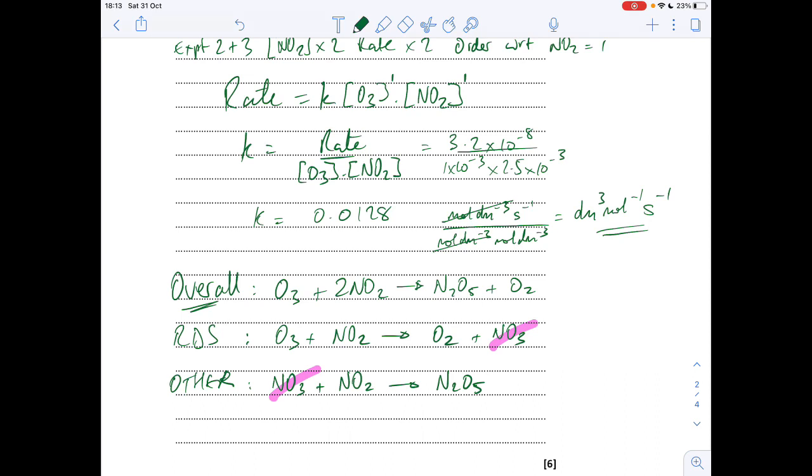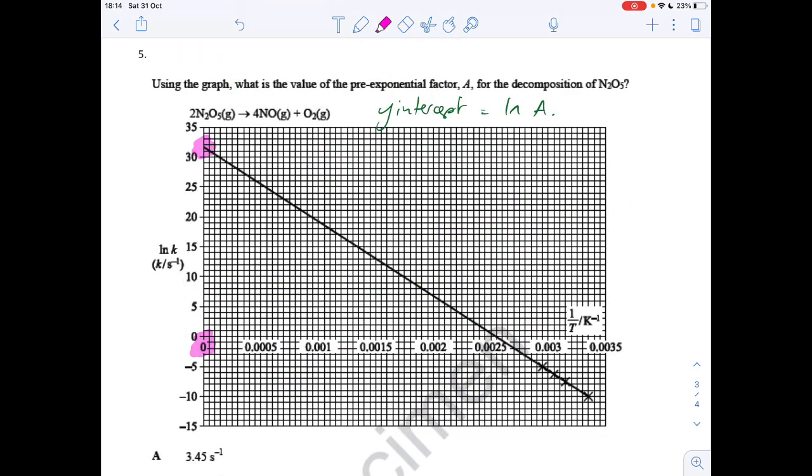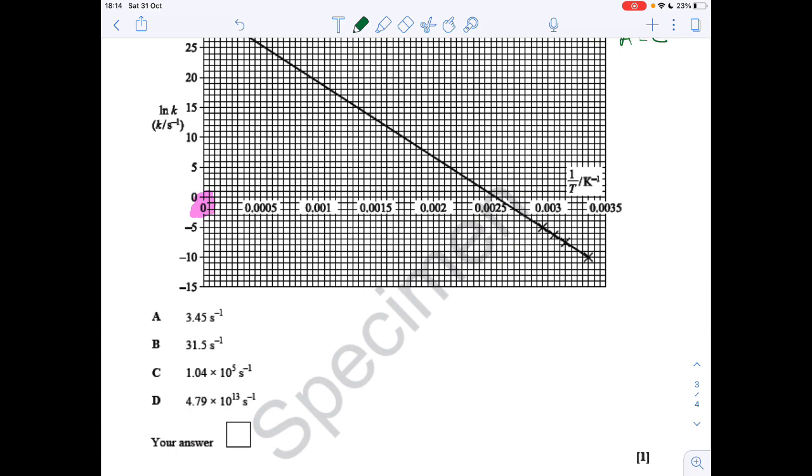Question 5: It's an Arrhenius graph. You can see I've highlighted the fact that it starts at zero on the x-axis, which means that the y-intercept is equal to the ln of A. That comes from the y equals mx plus c form of the Arrhenius equation, which is on the datasheet. Basically, what that means is that ln A equals 31.5, so therefore A is going to be equal to e to the 31.5. When you plug that into your calculator, option D comes out as the answer.